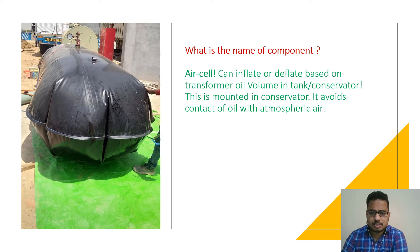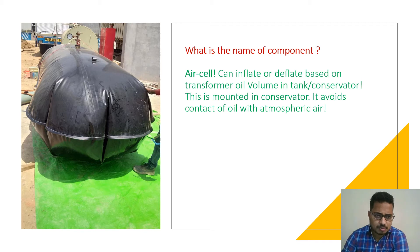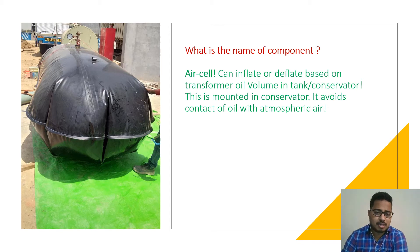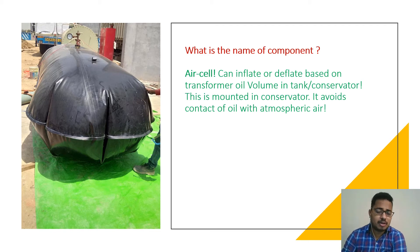This component is mounted in the conservator. It avoids contact of oil with the atmospheric air. The backside portion is the conservator — this will be placed inside the conservator. Whenever loading on the transformer changes, oil may contract or oil may expand due to heat content in the transformer.